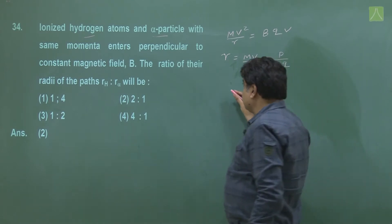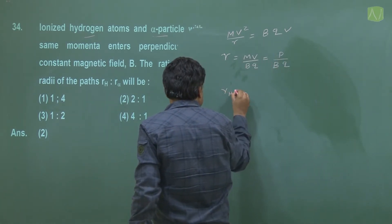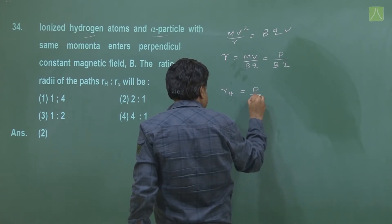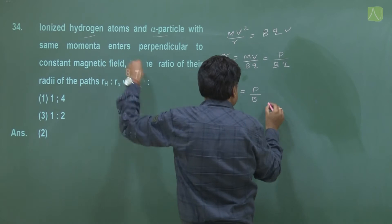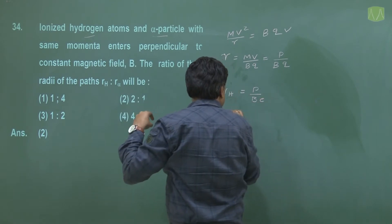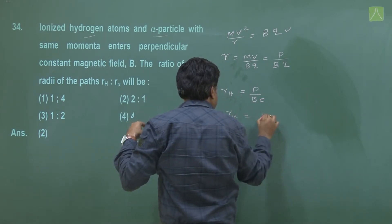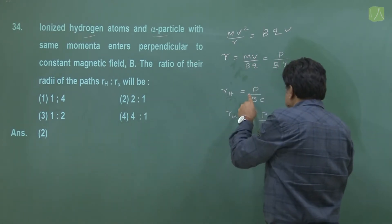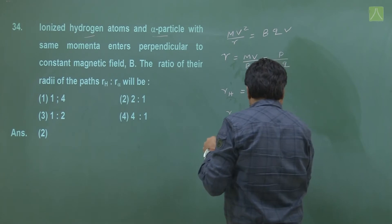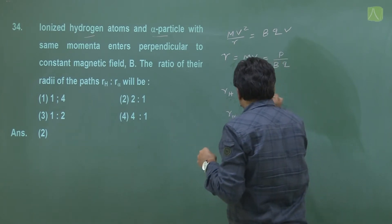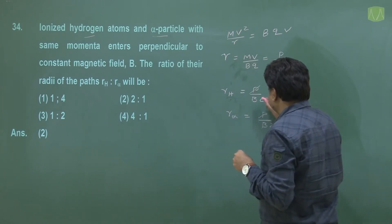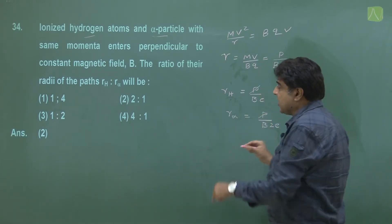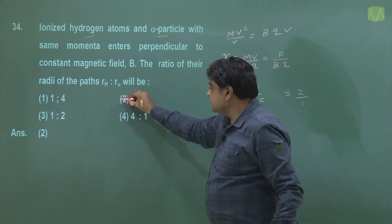When we take the ratio of radii, for hydrogen we have momentum p and charge e, and for alpha we have the same momentum p and charge 2e. When we divide, p, p, B, B all cancel out, so we get the ratio 2:1, and the right option is the second one.